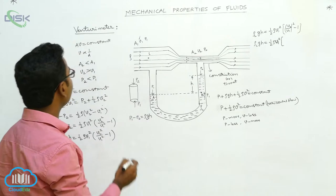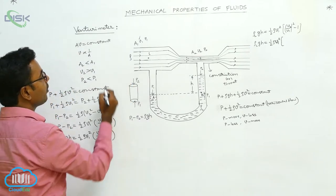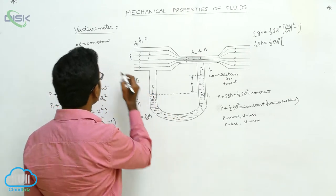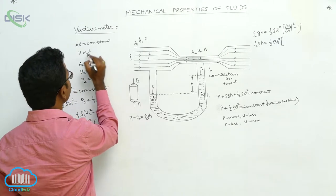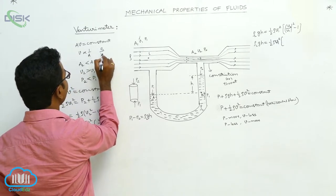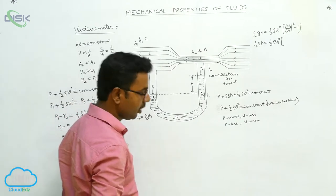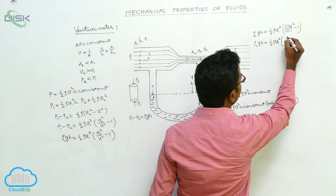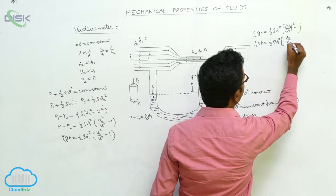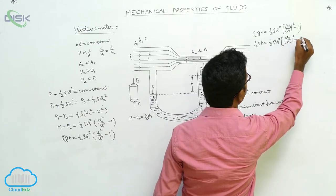According to the equation of continuity, V2 by V1 can be written as A1 by A2. Av is equal to constant, V proportional to 1 by A. V2 by V1 is equal to A1 by A2. So V2 by V1 can be written as A1 by A2 here. Now it is A1 by A2 whole square minus 1.